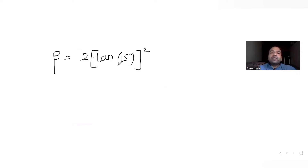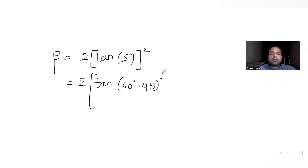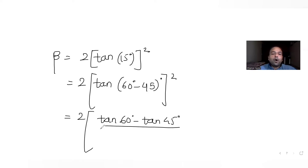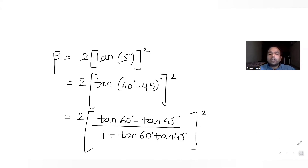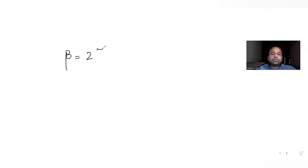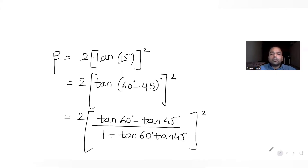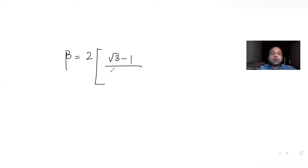To find tan(15°), we write tan(15°) = tan(60° - 45°). Using the formula tan(A - B) = (tan A - tan B)/(1 + tan A·tan B), we get (√3 - 1)/(√3 + 1) after substitution. So β = 2·[(√3 - 1)/(√3 + 1)]².